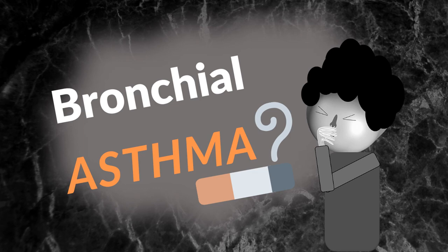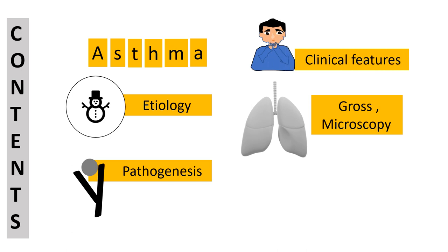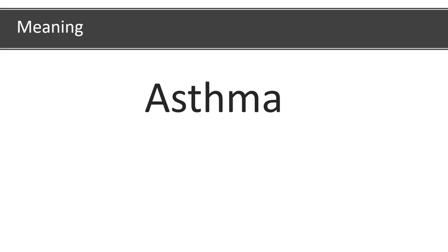Hi friends, welcome to Pathology Riddles. Today's topic is bronchial asthma. If you like our videos, please subscribe to our channel. Today we will talk about the word meaning of asthma, its definition, etiology, pathogenesis, gross and microscopy, symptoms and signs, status asthmaticus, and diagnosis of asthma.